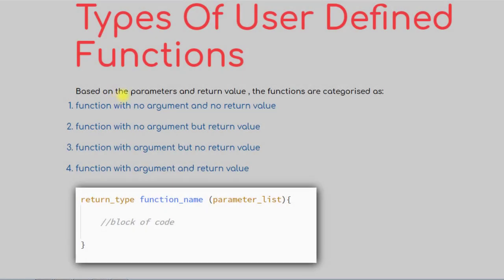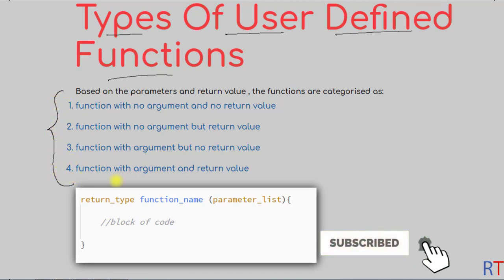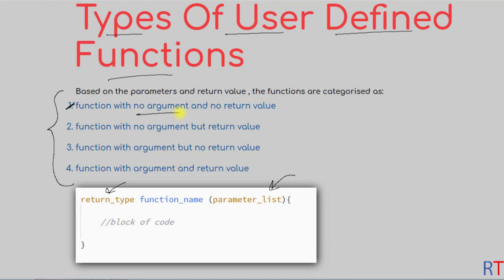In this video we're going to talk about types of user-defined functions. They are divided into four categories based on their parameters and return value. The first category of functions has no argument and no return value. The second category has no argument but it returns a value.